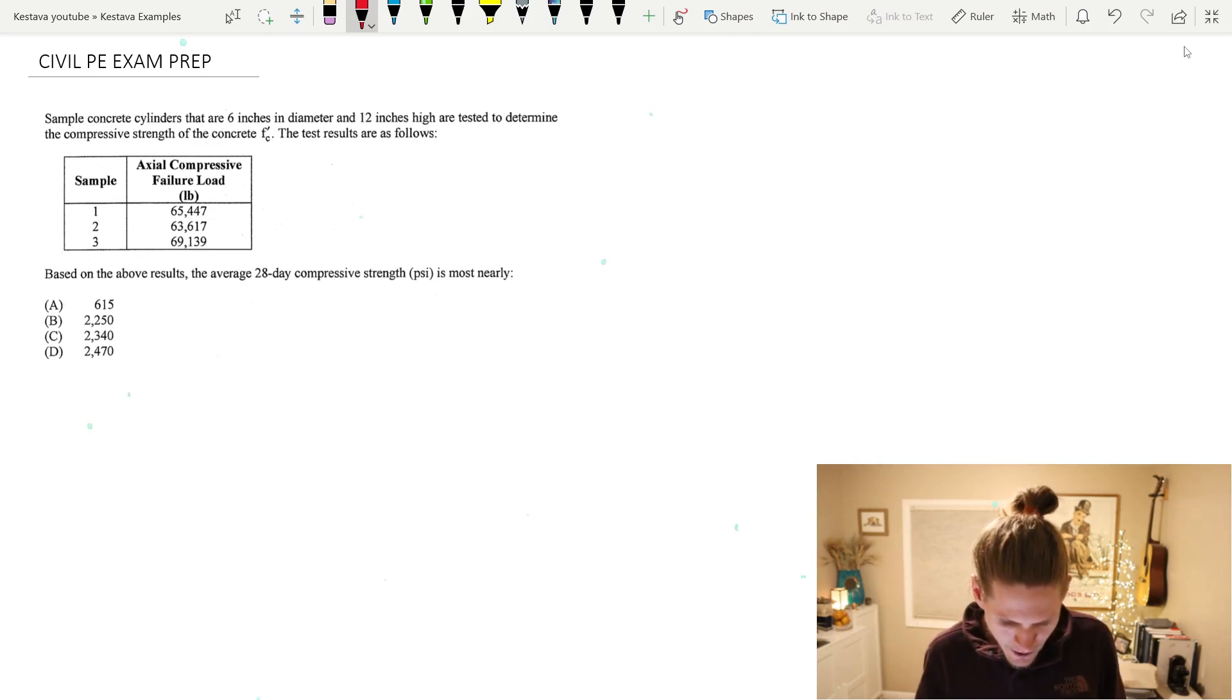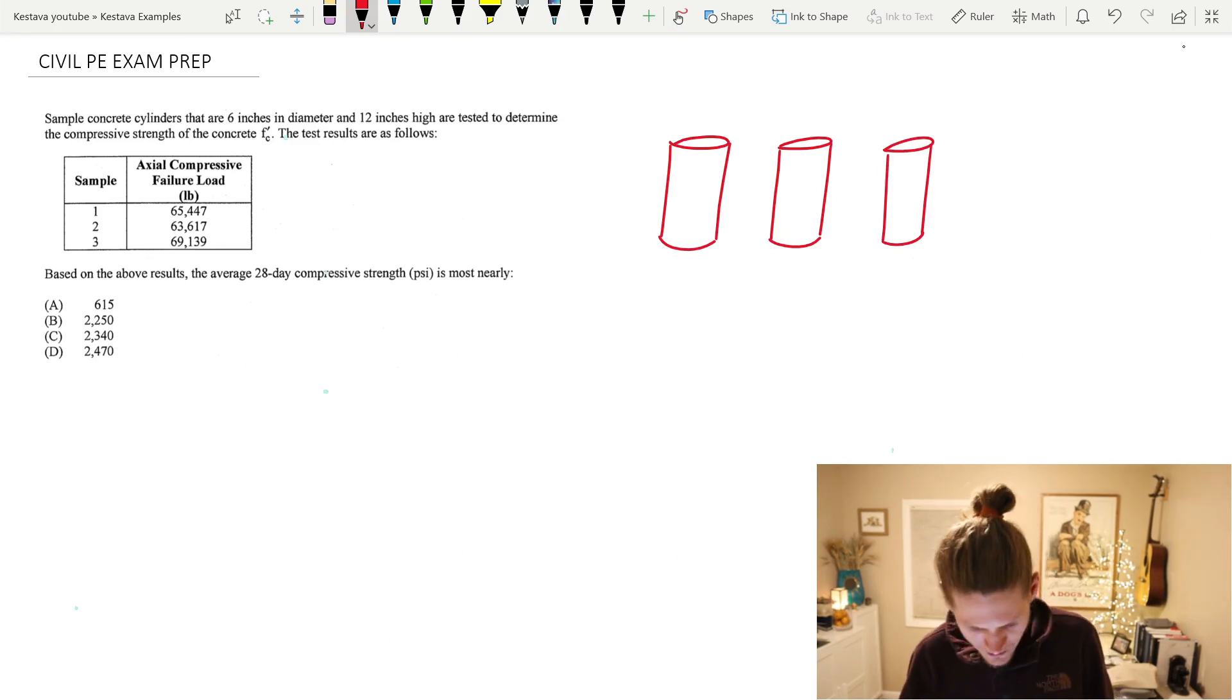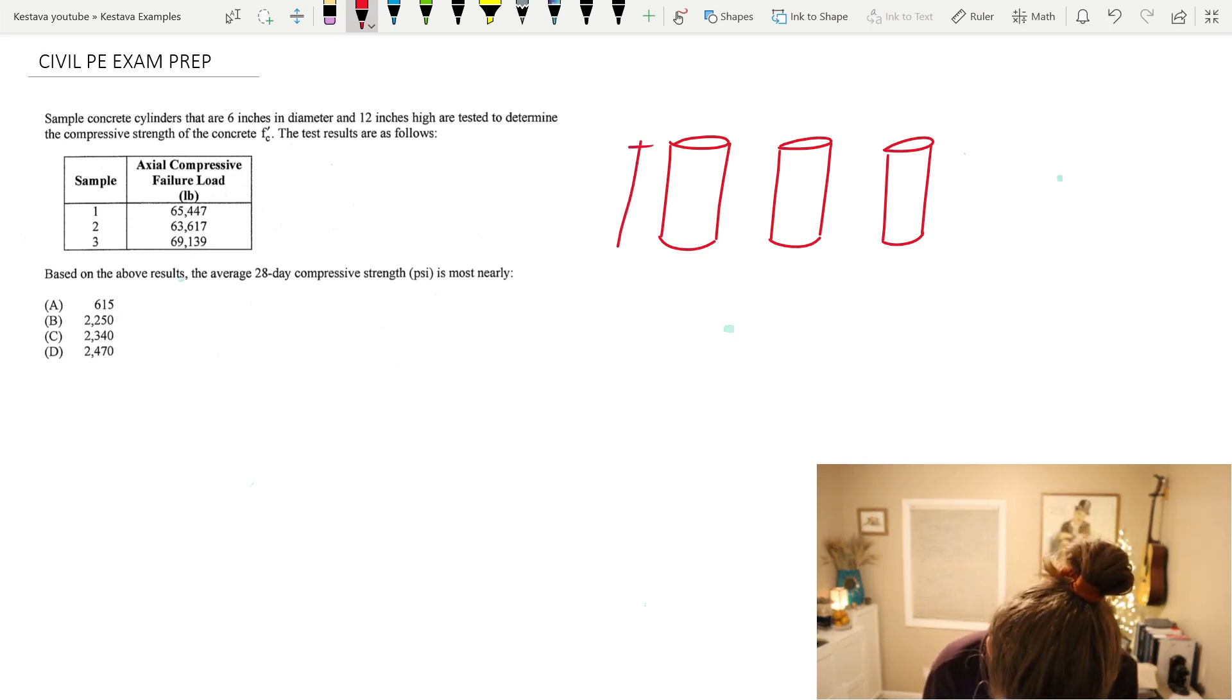We have concrete cylinder samples that are six inches in diameter and 12 inches high. That's pretty common in the professional world where if your building is under construction, samples of the concrete batches delivered to site will be taken to test the concrete to make sure it meets all the specifications that you as the designer specified on your drawings.